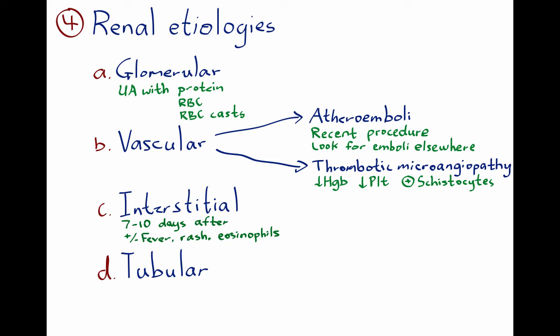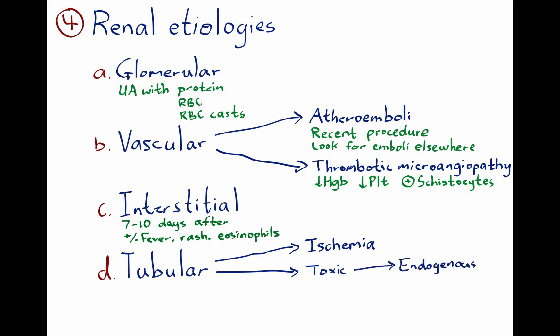The last category is the tubular compartment. All patients who have prolonged ischemia — for example, cardiogenic shock or septic shock — can develop acute tubular necrosis. But in the absence of an obvious pre-renal insult, one needs to look at toxins. Both endogenous toxins like myeloma paraproteins and heme pigment can cause ATN.